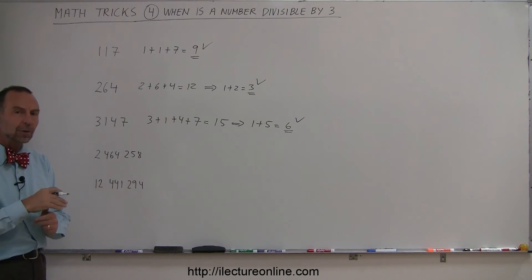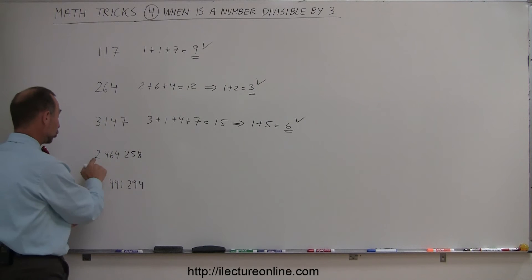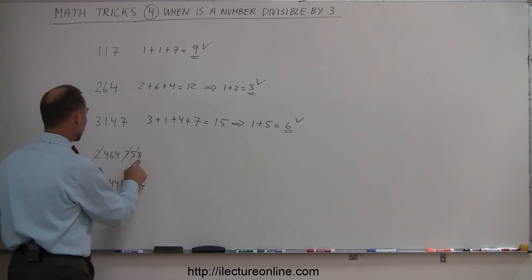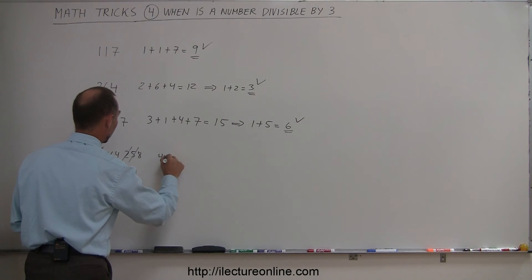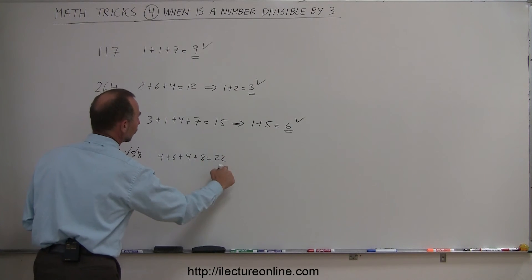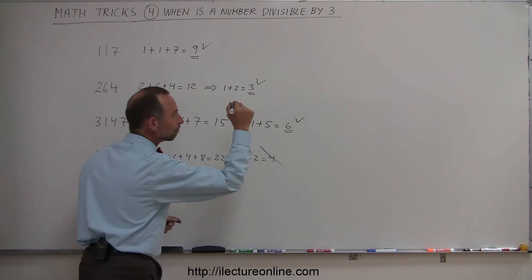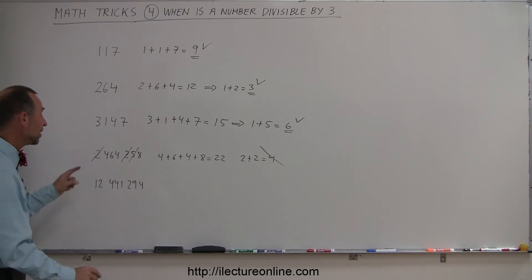If any numbers add up to 9, we can simply discard them. For example, 2 plus 2 plus 5, those add up to 9, so we can get rid of those. Then we have 4 plus 6 is 10, plus 4 is 14, plus 8 is 22. So 4 plus 6 plus 4 plus 8 equals 22. Add those two numbers together: 2 plus 2 equals 4. Nope, 4 is not divisible by 3. That means this number is not divisible by 3.